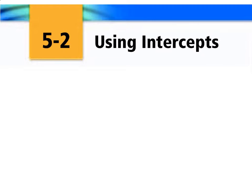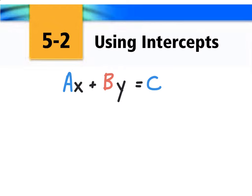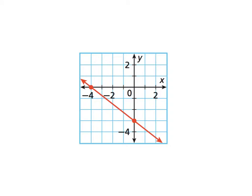Hello everyone, this lesson is about using intercepts. It fits in well with what we've been doing because standard form is a great way to locate the intercepts of a line. The standard form for a linear equation is ax plus by equals c, where a, b, and c are coefficients, and both a and b cannot be zero. We've been practicing locating a, b, and c, and now we're going to put them to good use.